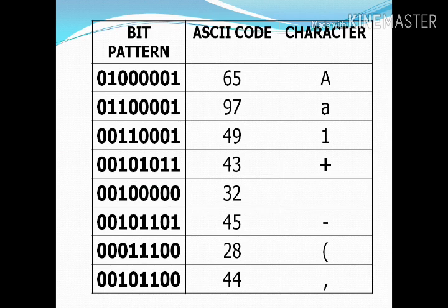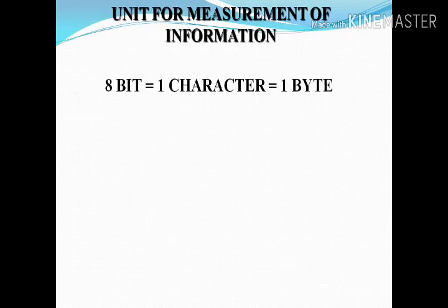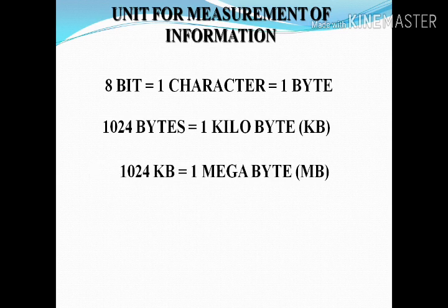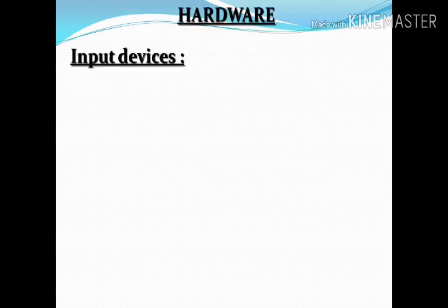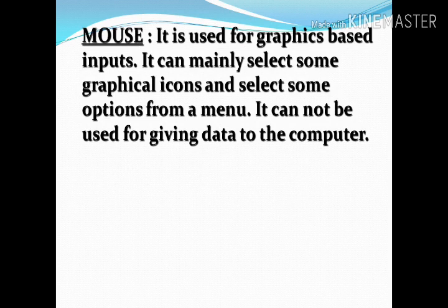The bit patterns, ASCII codes, and characters are given here — for example, zero-one-zero-zero represents small 'a' or capital 'A'. The units of measurement of information: generally eight bits equals one character or one byte. One thousand and twenty-four bytes equals one KB or kilobyte; one thousand and twenty-four KB equals one MB or megabyte; one thousand and twenty-four MB equals one GB or gigabyte; one thousand and twenty-four GB equals one TB or terabyte.